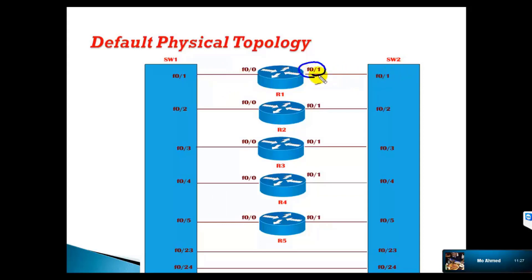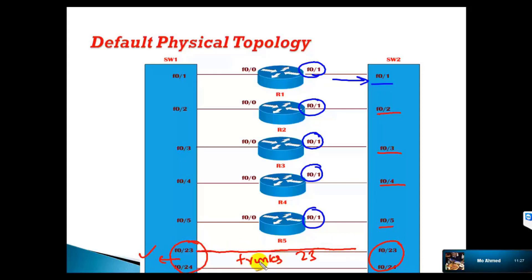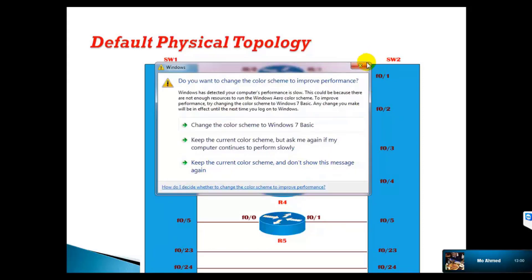Similarly, all router F0/1s are connecting to switch 2. On switch 2 I use similar ports: F0/1 connecting to router 1, F0/2 connecting to router 2, F0/3 for router 3, router 4, and router 5. Between switch 1 and switch 2 you can see port numbers 23 and 24 — these two links are actually connecting switch 1 to switch 2, and these links will be acting as my trunk links for allowing VLAN traffic.